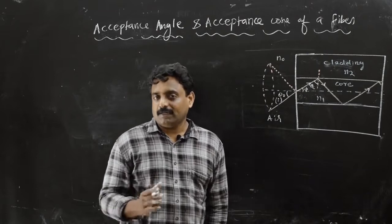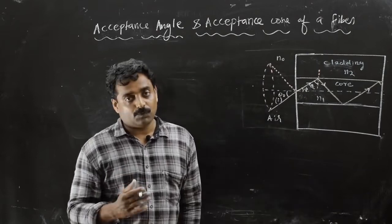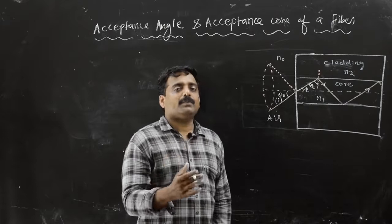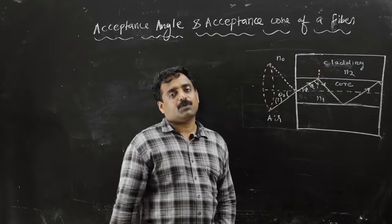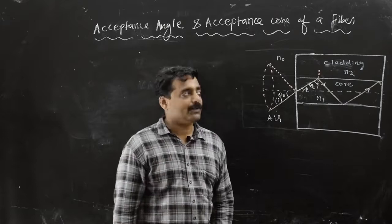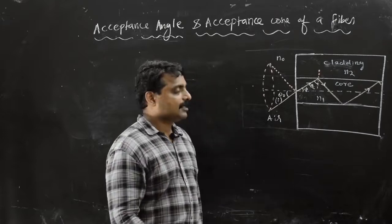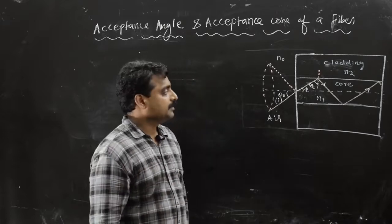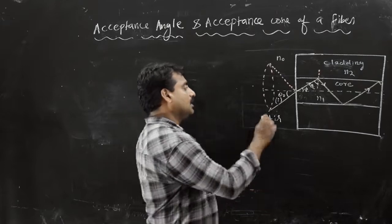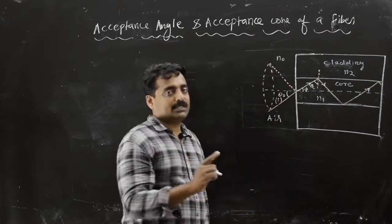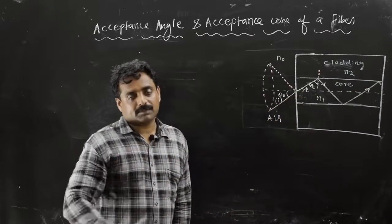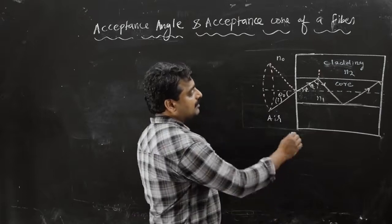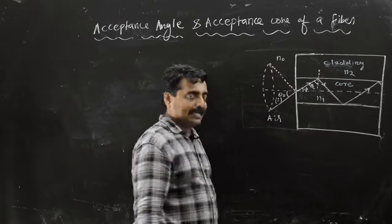Today we are discussing what is meant by acceptance angle and acceptance cone. Consider an optical fiber. The inner part of the optical fiber is known as the core. The outer part is known as cladding.